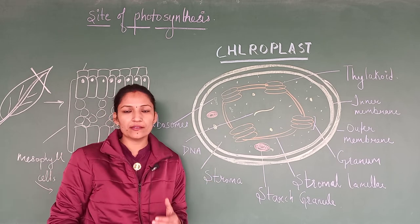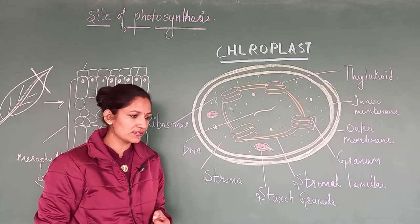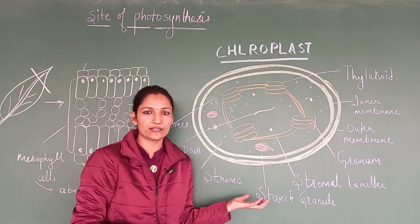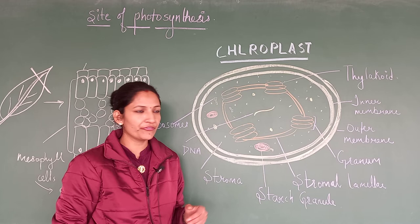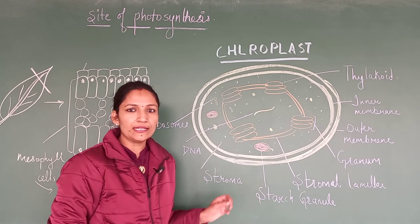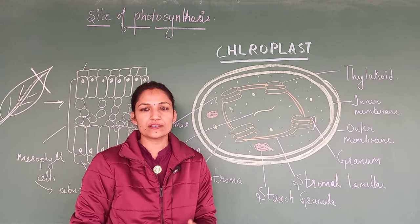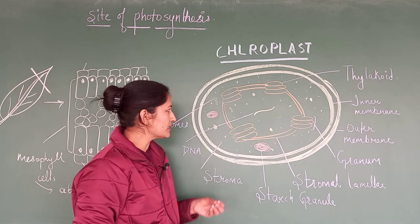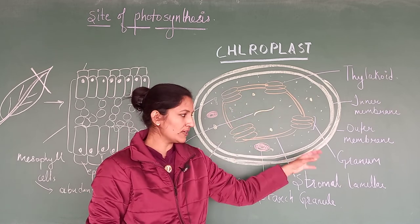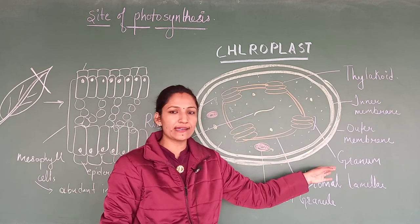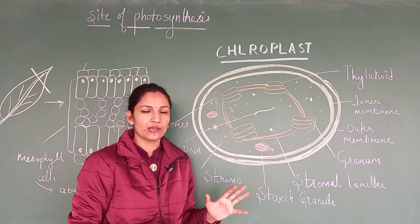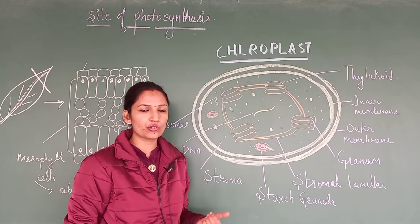This chloroplast, as we have discussed under the cell biology chapter, is a double membrane organelle. We will see what are the exact sites for the different steps of photosynthesis. It contains a green colour pigment specially present in structures called thylakoids, and a bundle of thylakoids is called granum. So, chloroplast mainly contains these two parts involved in photosynthesis.